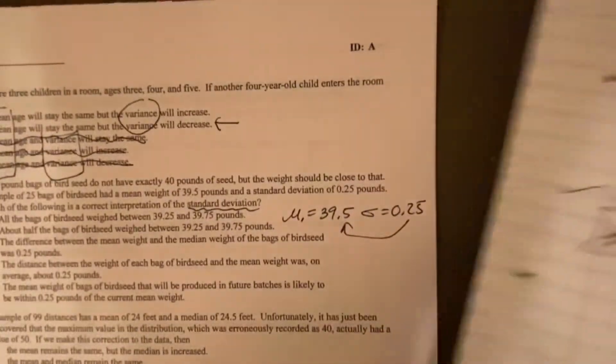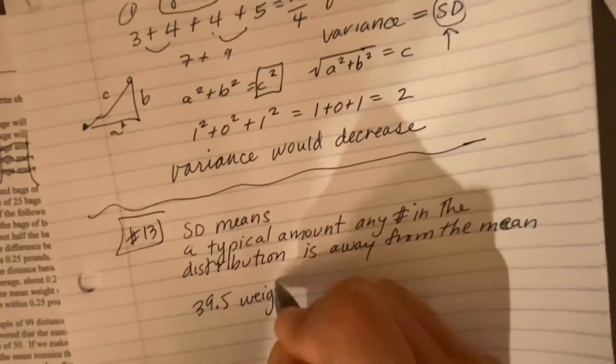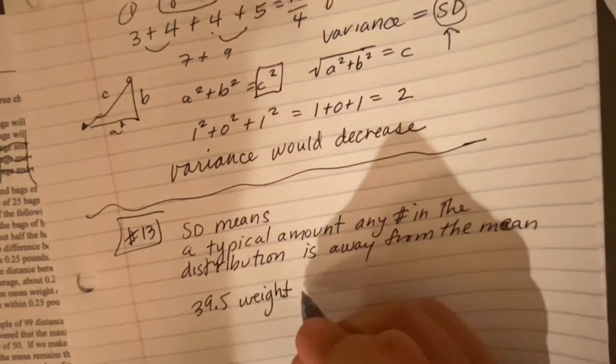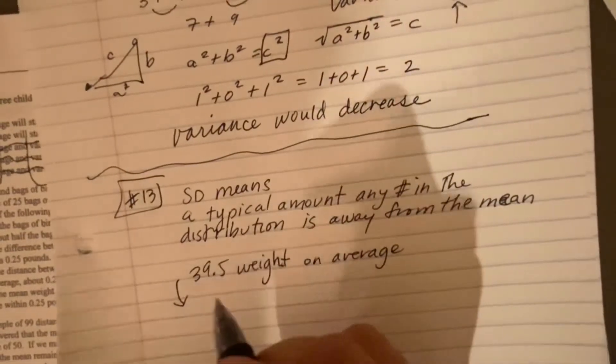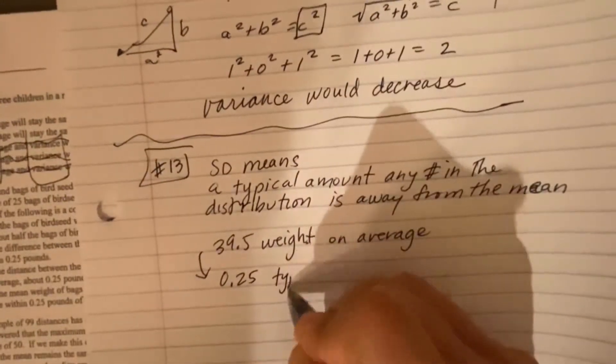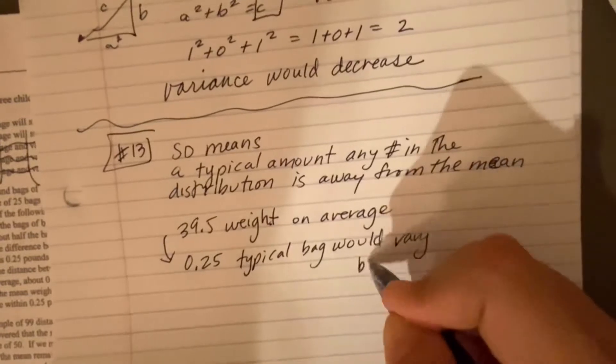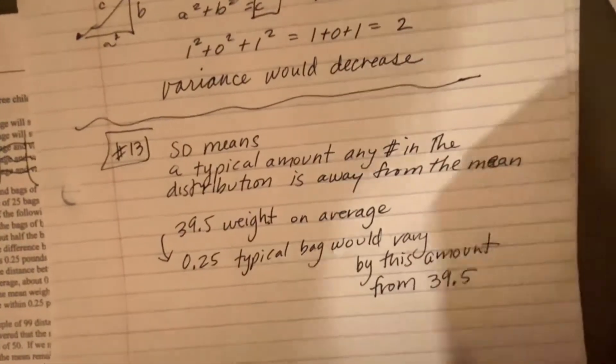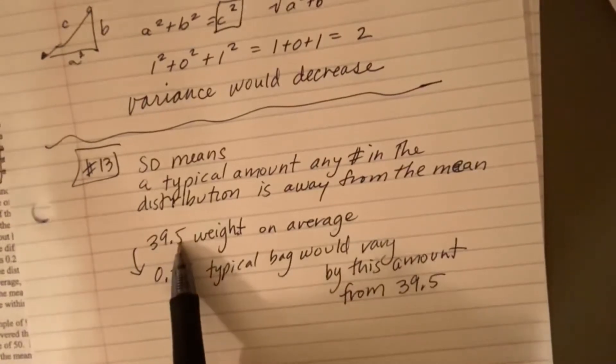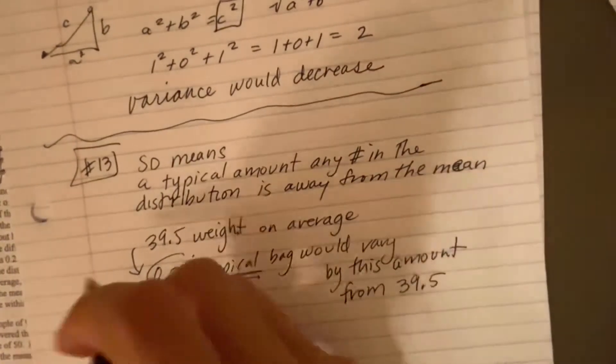So in this example, it's saying on average, the sacks weigh 39 and a half. But not exactly. And so what they're saying is the amount that a typical bag would vary from this. So they're saying a typical bag weighs this and a typical bag would vary by about this from that. So that's what standard deviation means.